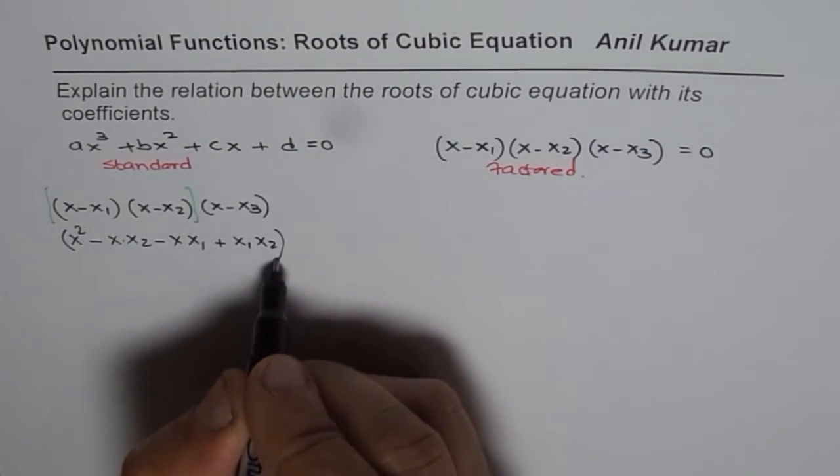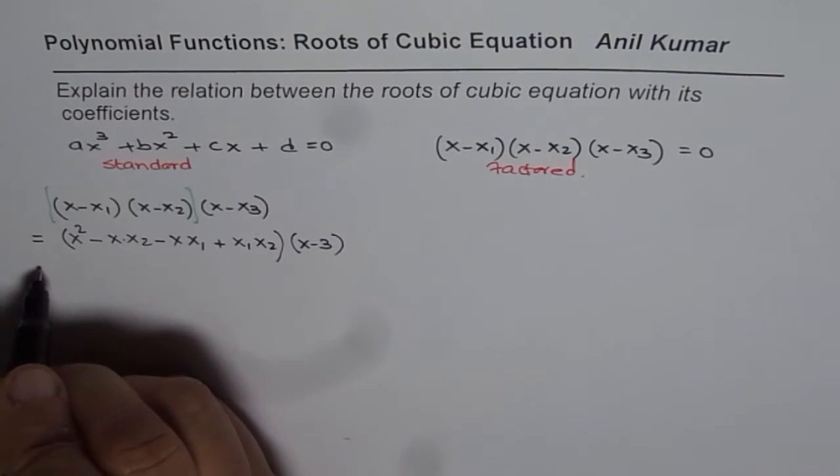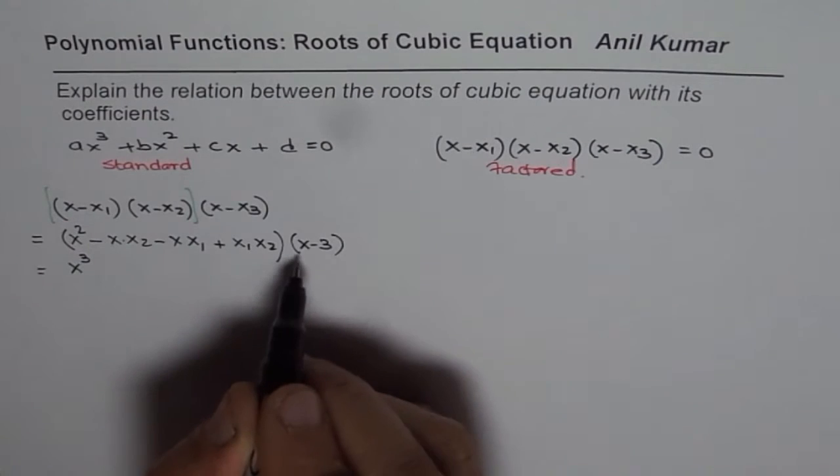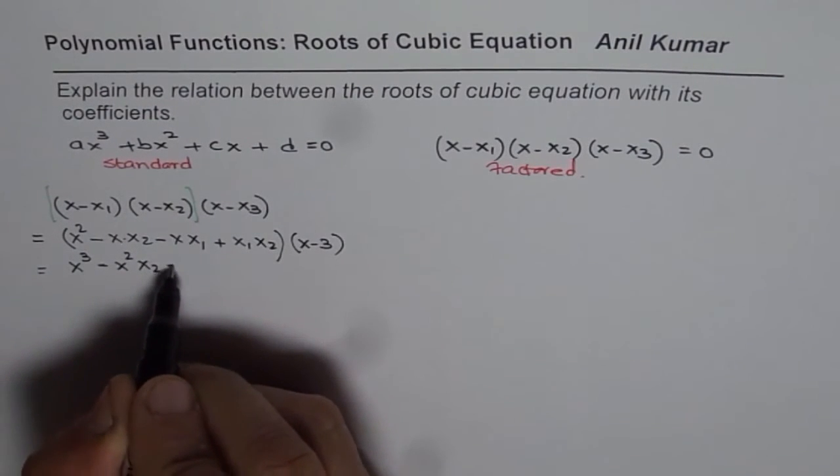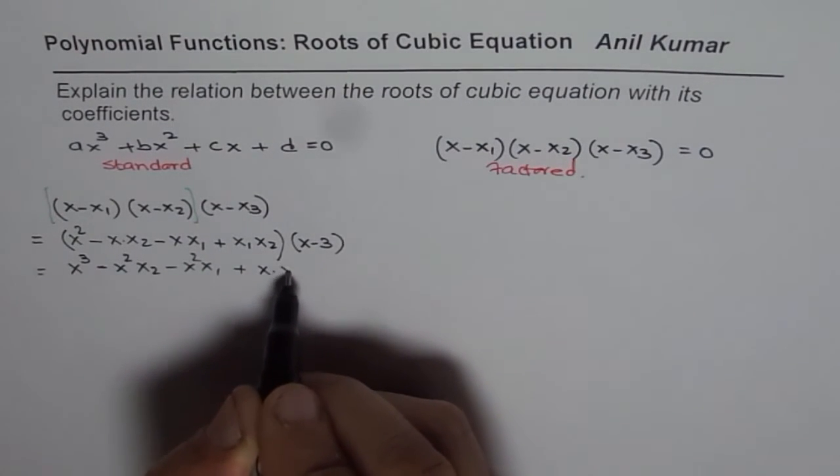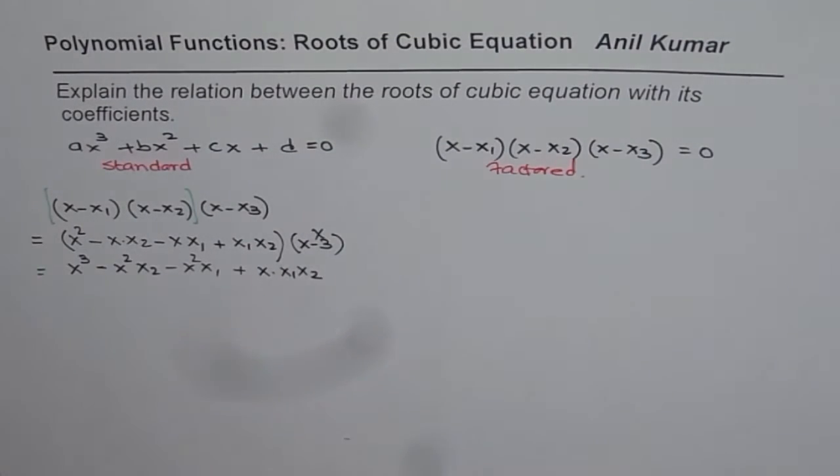Now with that we will multiply now (x - x₃). So x times x² will give us x³. Now x with x will give us x²x₂, then again x²x₁ plus x times x₁x₂. I mean this is x₃, right?